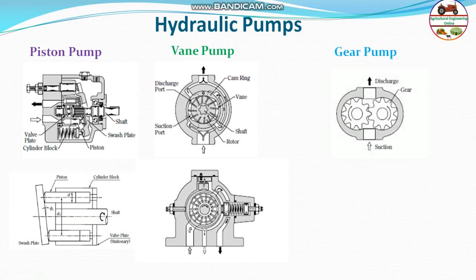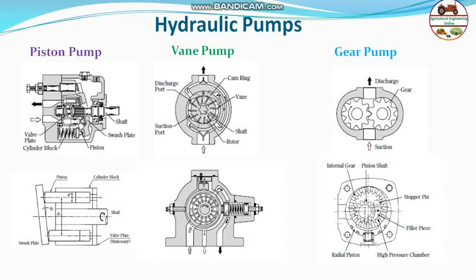The gear pump operates by moving volume between tooth spaces and the casing — this is called the external gear pump. Its efficiency is slightly low and drops as the gear wears out. It is susceptible to foreign substances, but its suction ability is higher than the other two pump types. Variable displacement cannot be changed in this case. Its size is small, so it is widely used in hydraulic systems.